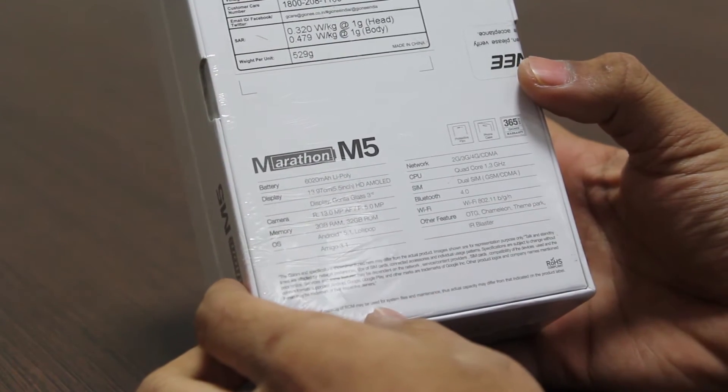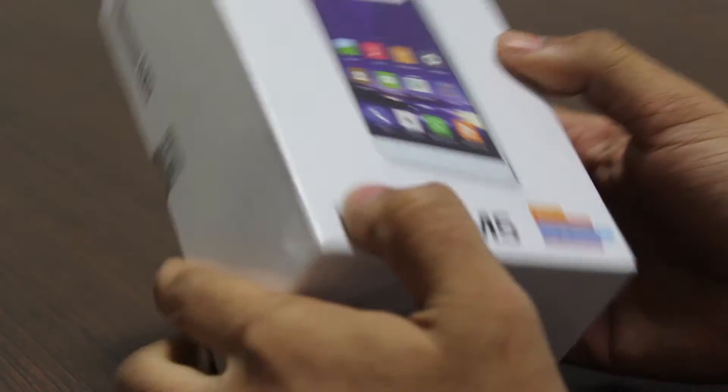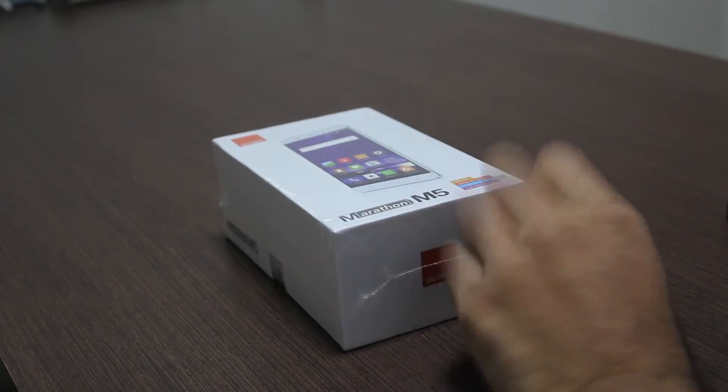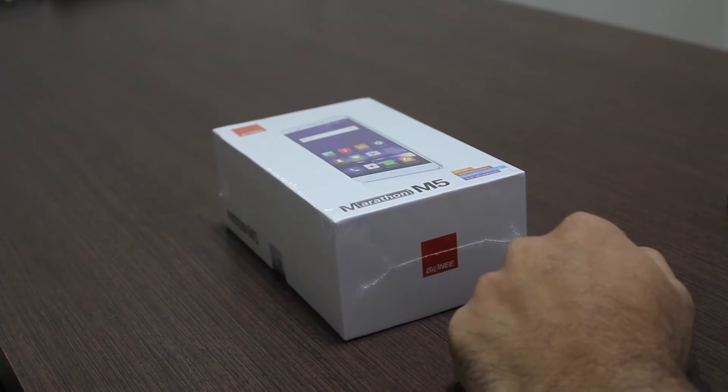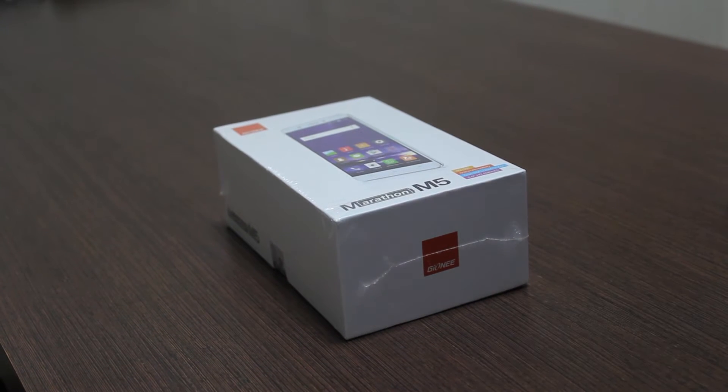Amigo 3.1 UI on top of Android Lollipop - wow that's really nice. This has a 1.3 GHz quad core processor that is a MediaTek 6753. This phone is 4G LTE enabled, it's a dual SIM device.